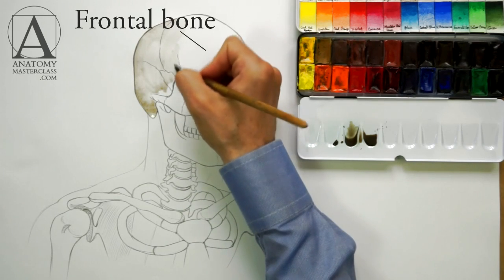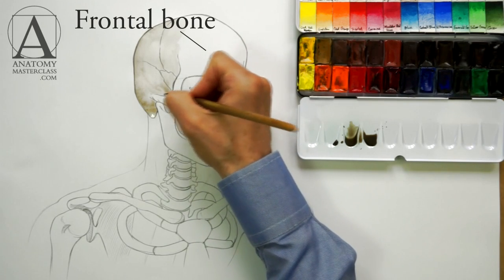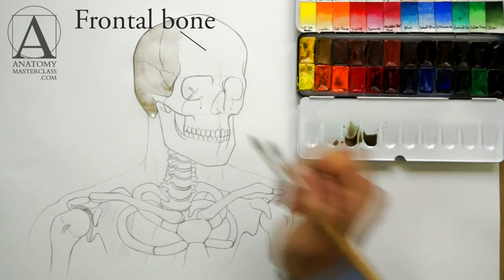In the front, there is the frontal bone which forms the forehead and upper walls of the eye sockets.